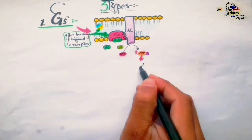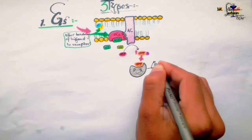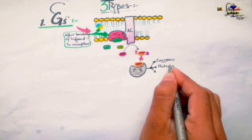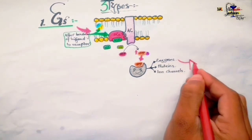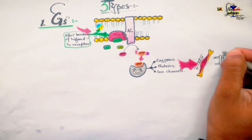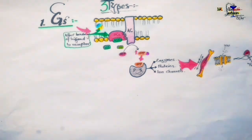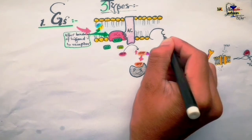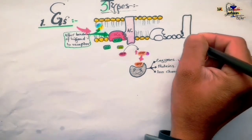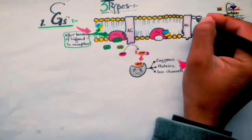cAMP acts as the second messenger intracellularly, with the ligand being the first messenger. cAMP then interacts with protein kinase enzymes, which result in alterations in enzyme activity, alterations in intracellular proteins, and alterations in the conductance of ion channels. This leads to functions like contraction and relaxation of muscle fibers, alteration in cell membrane permeability, synthesis of proteins, secretion or release of substances by the target cell, and other physiological activities. Afterward, the alpha subunit dissociates from adenylyl cyclase, recombines with GDP and the beta-gamma subunits, and adenylyl cyclase becomes inactive in the absence of the alpha subunit.